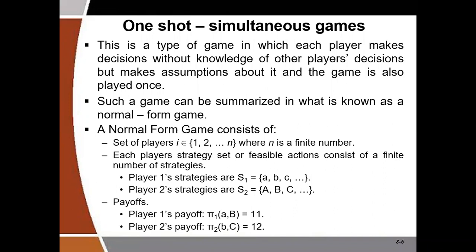Let's start with one-shot simultaneous games. This is a type of game in which each player makes decisions without the knowledge of other players' decisions but makes assumptions about them. Every simultaneous game — whether one-shot or repeated — when we represent a summary of it in a table or diagram, it is called a normal-form game.